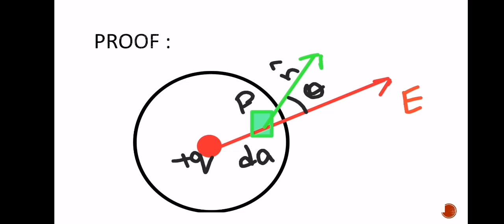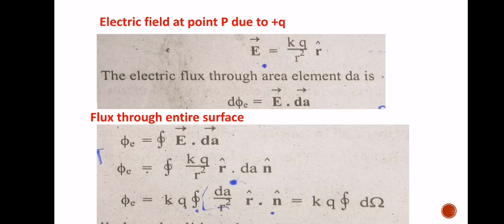For the proof of Gauss's law, consider a closed surface in the shape of a sphere enclosing a positive charge. The direction of electric field intensity is radial — directed along the radii of the sphere. At a point P, we take a small area element of the surface. The normal unit vector makes an angle theta with the electric field lines at point P. The electric field at point P due to the positive charge is E = KQ / R² times the unit vector R̂.